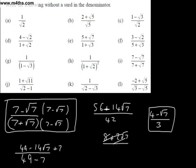So that's rationalising surds. The idea is to avoid having a surd in the denominator. If it's a simple case with no addition or subtraction, simply multiply top and bottom by that surd. If there's an addition or subtraction, multiply by the conjugate, which creates a difference of squares and eliminates the surd from the denominator. We'll go on to look at how we can combine or convert between indices and surds in a later video.